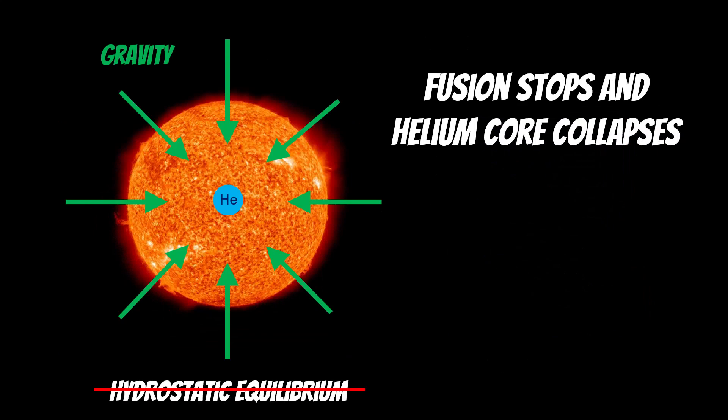So what happens is fusion stops in the core, so there's no longer any hydrogen to fuse into helium. The helium core collapses, and in a star like the sun there just isn't enough gravitational force to collapse it far enough to heat it up to then start fusing the helium. So that core collapses, it heats up, but not to the point where it starts fusing again.